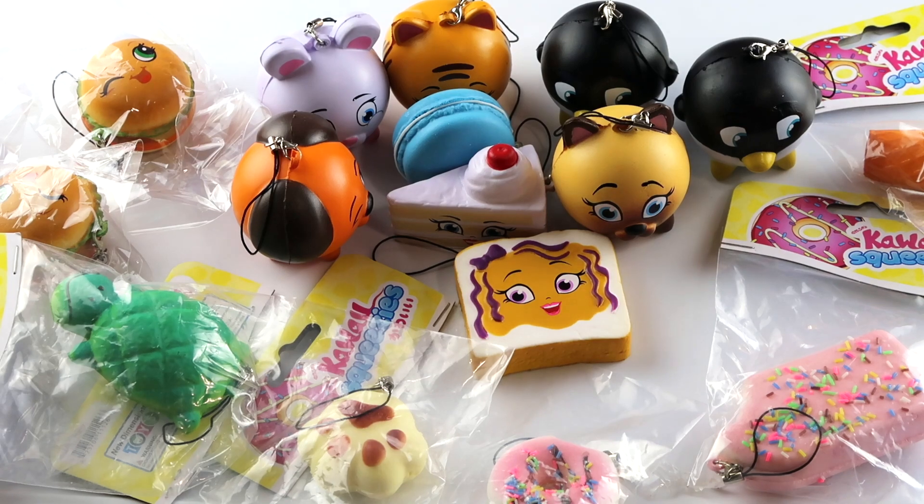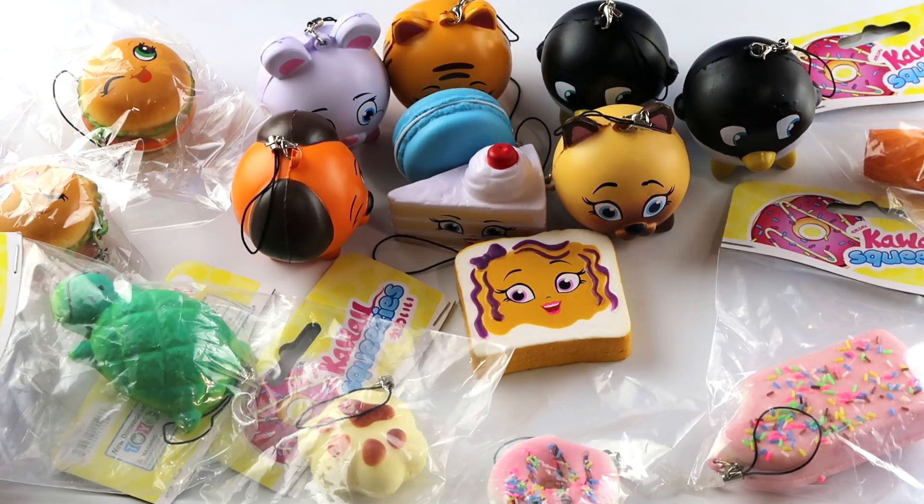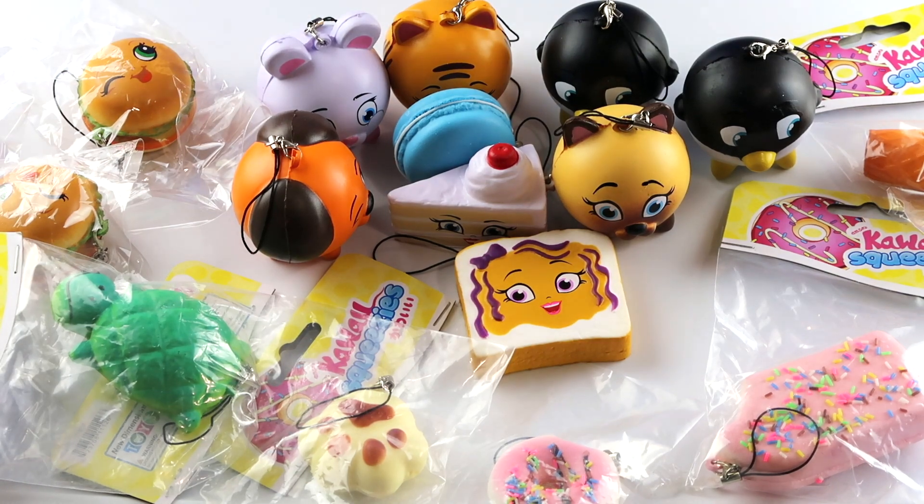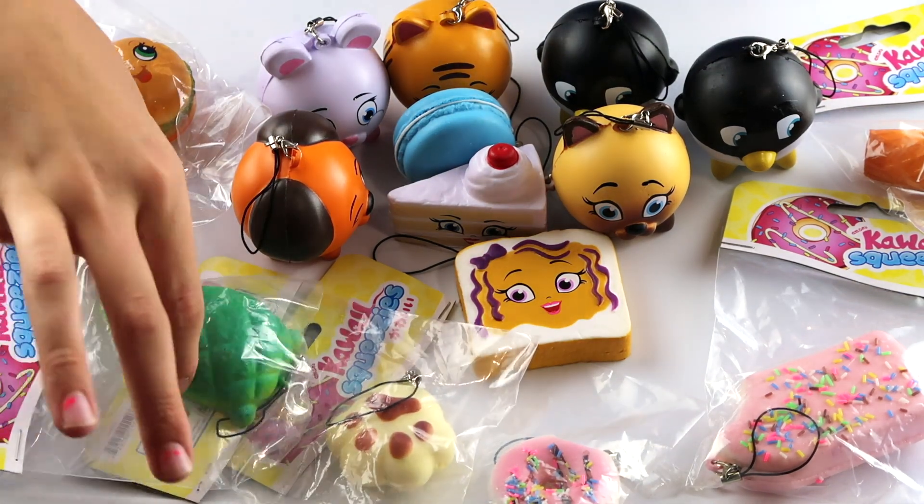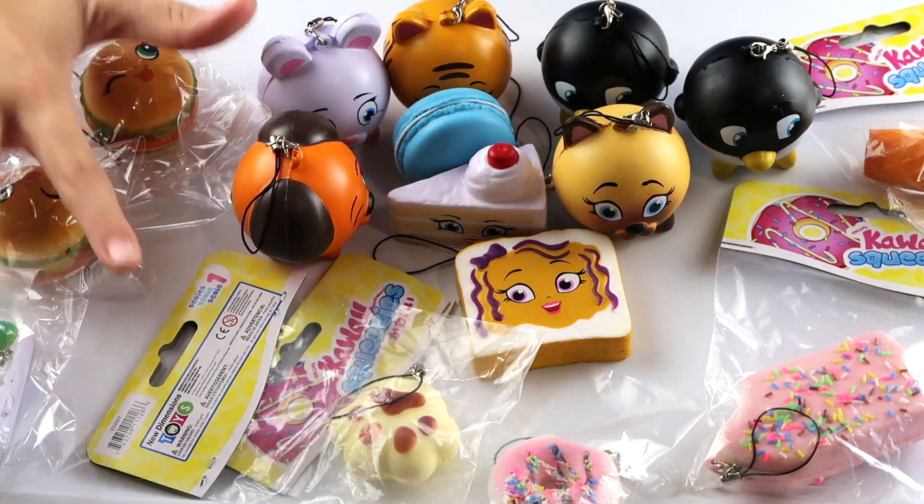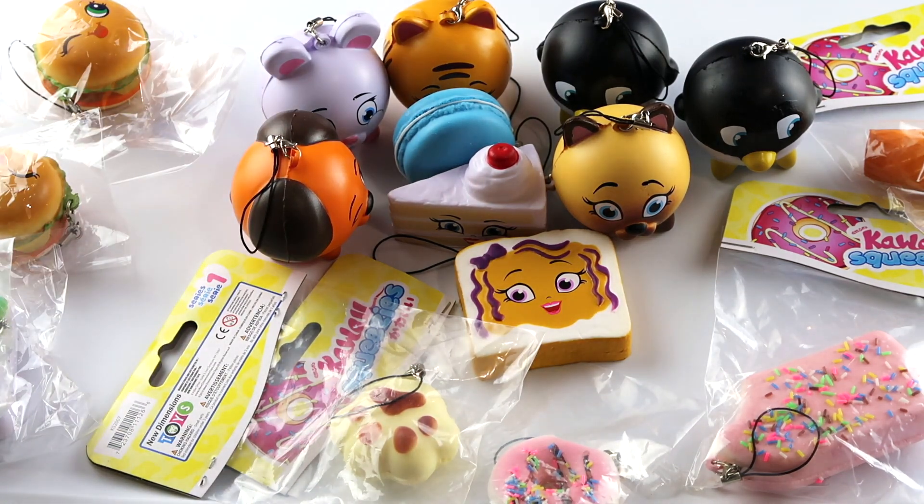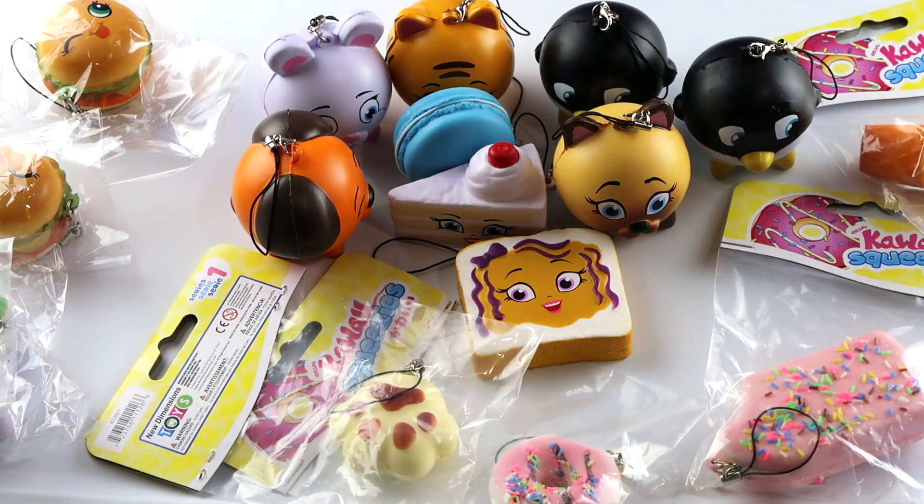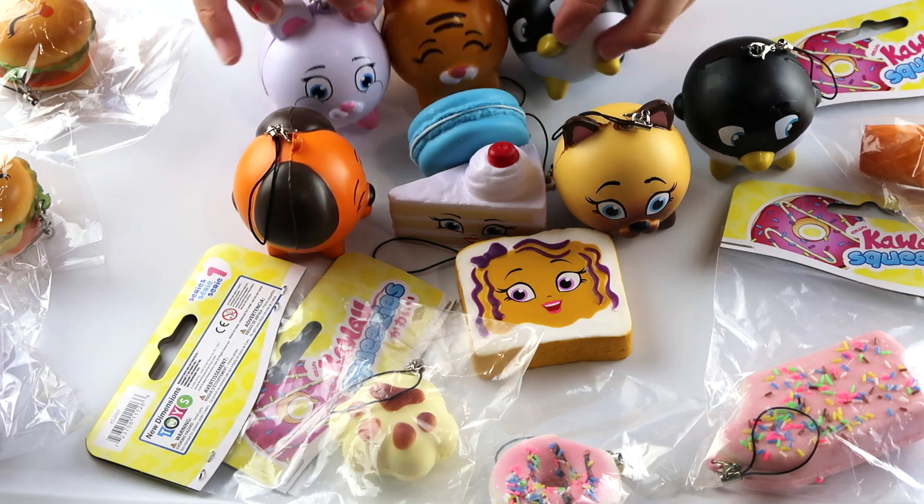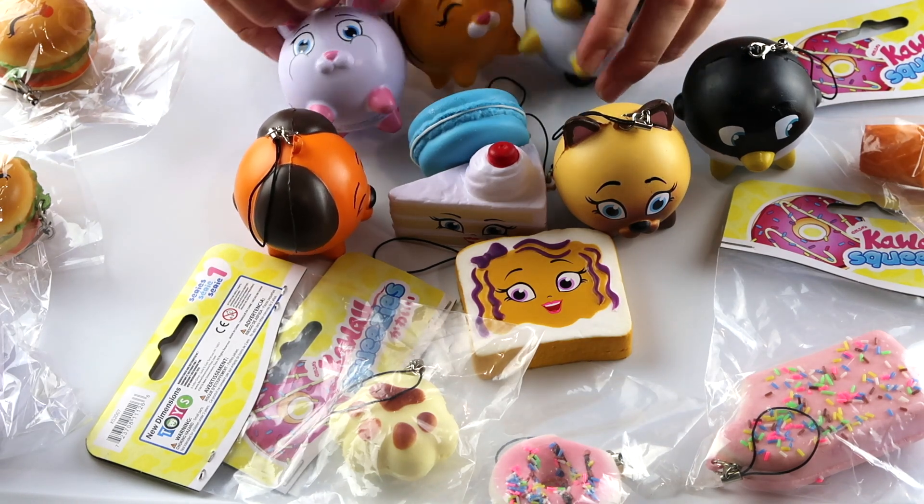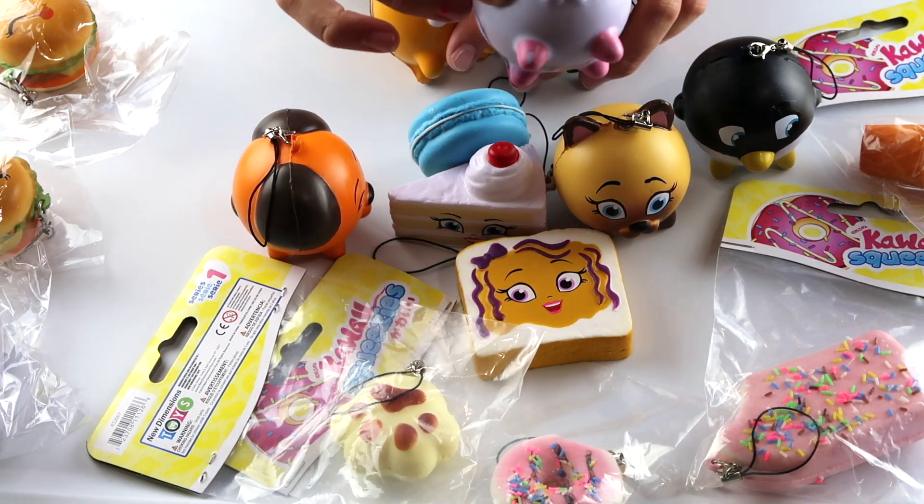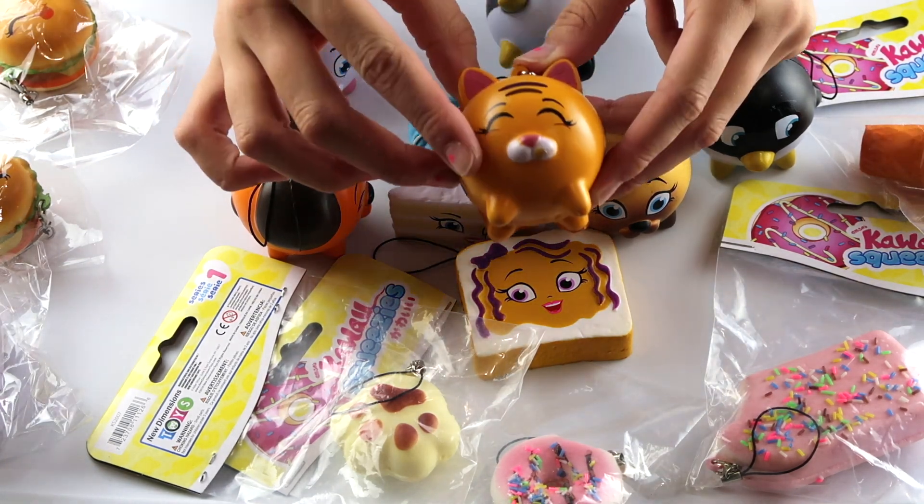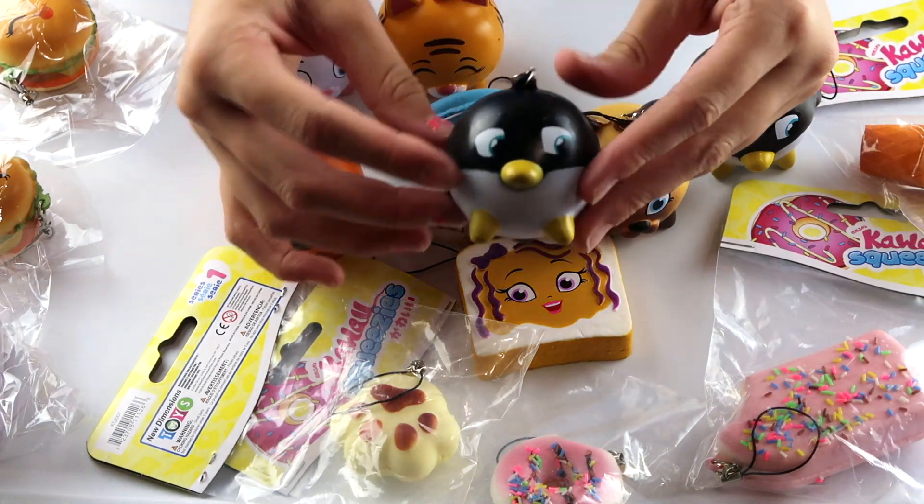So these are all of the kawaii squeezies that we got today. And all of the series one are in non-resealable packaging. But then all the other ones are in resealable packaging. Then we have five over here that we are giving out to a giveaway. So that's why they are still over there and they are in packaging. And these are all the ones that we are keeping which are in the middle. And all series one. And then I have my three little group of friends here. And I'm going to tell you all of their names. This is Millie the mouse. This is Tondra the tiger. This is Pedro the penguin.